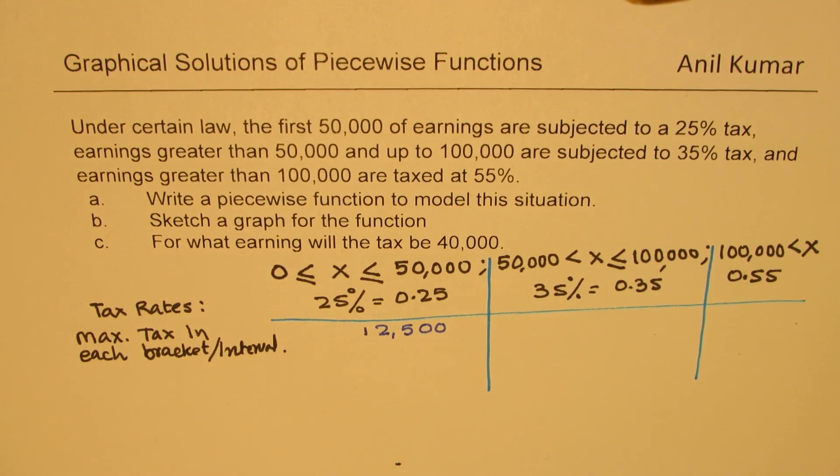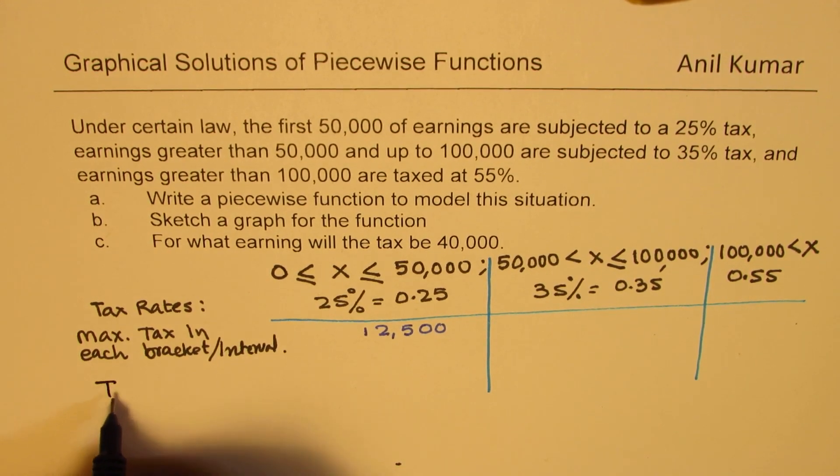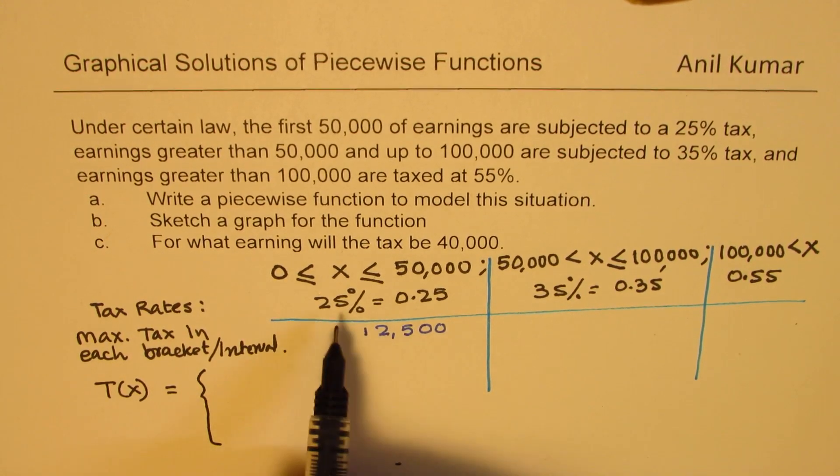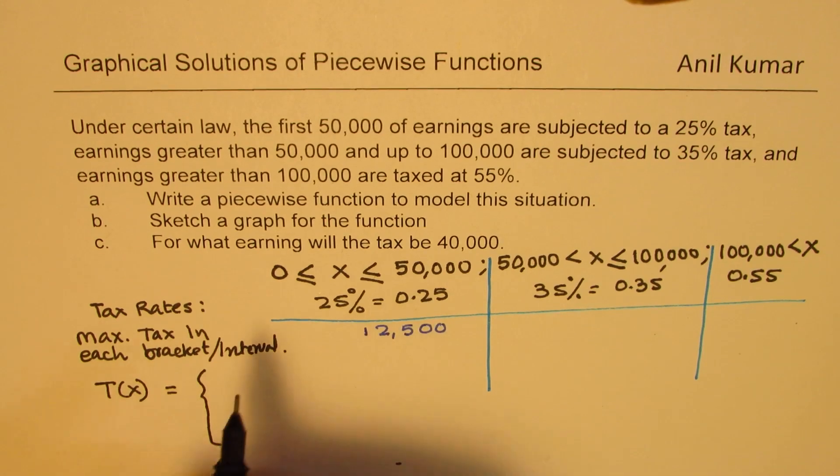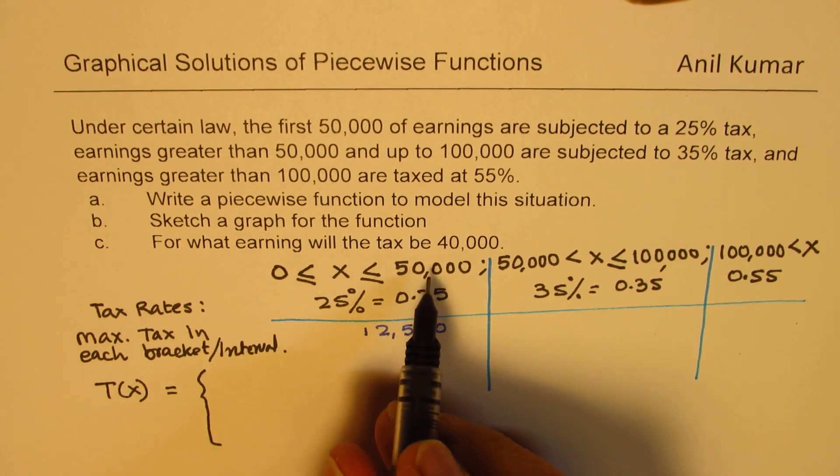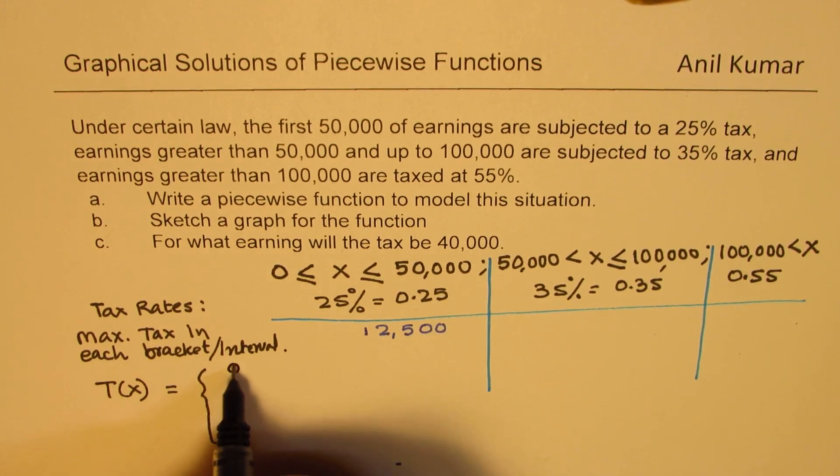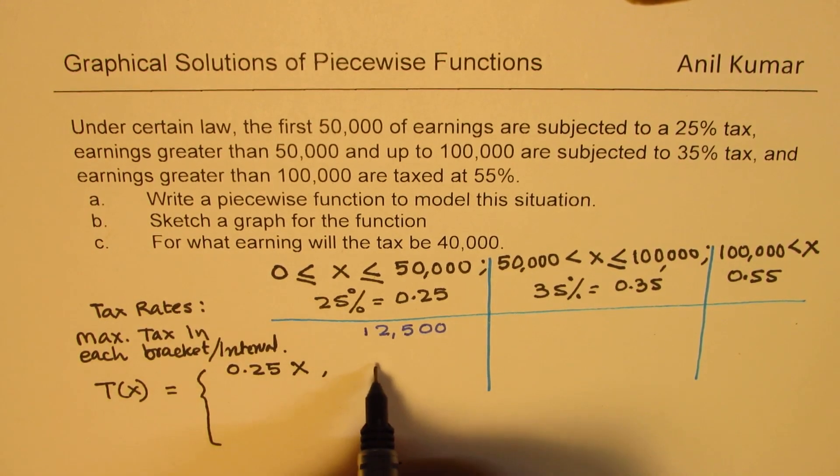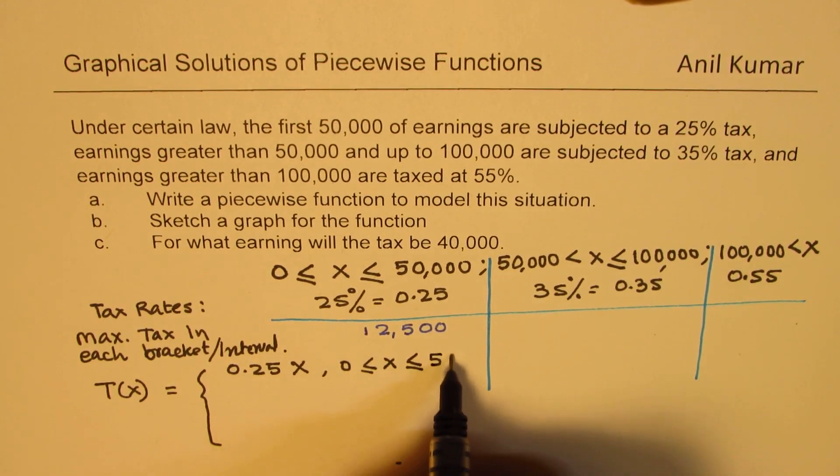Let us say the tax for our earning X is equal to: First part is very clear, and the first part is that it is 25% of the earnings, which is 0.25 of the earnings, which is represented by X. That works when we have X which is greater than or equal to 0 and is less than or equal to 50,000.